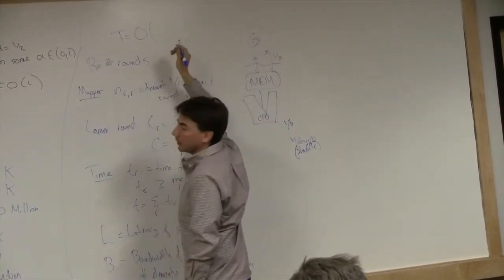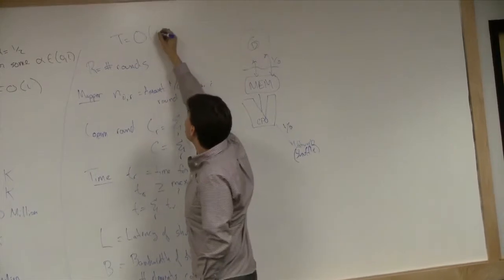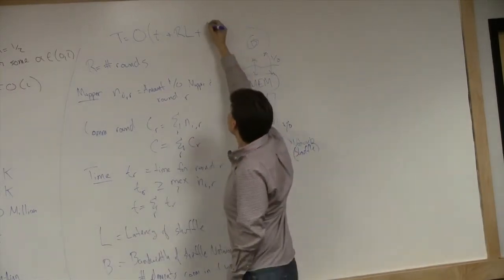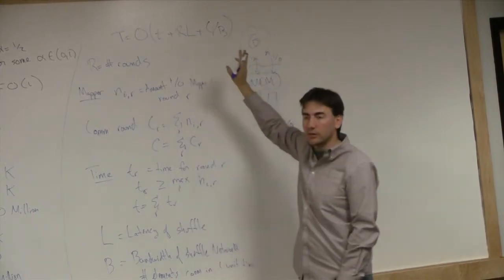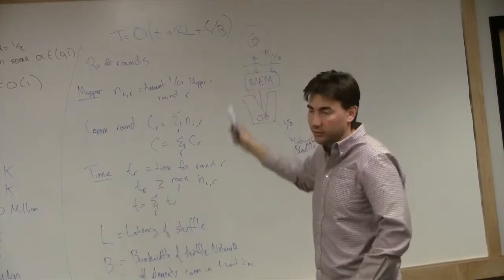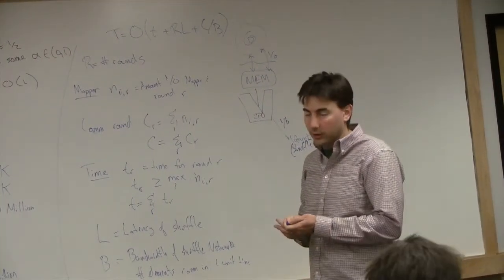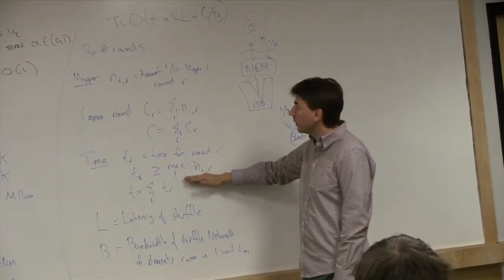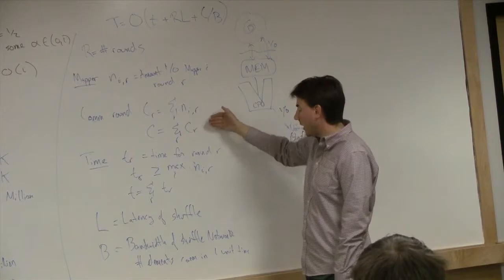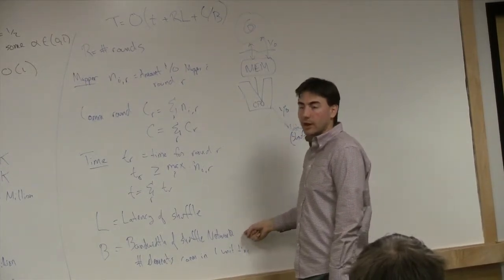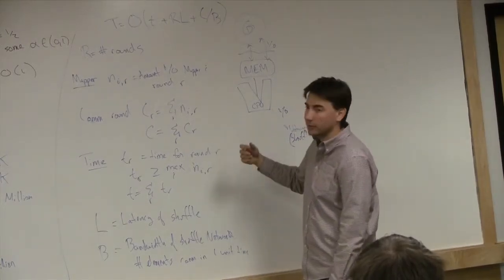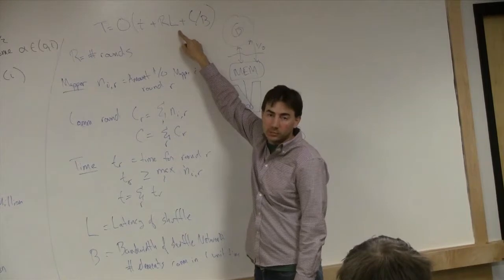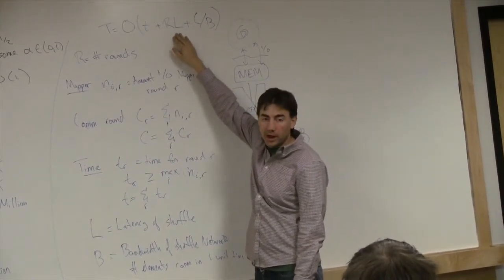The total time is roughly T + R*L + C/B. That's how all these parameters fit together - that's the function you want to minimize. T has to do with maximum IOs per round, C is total communication divided by bandwidth, and R*L accounts for latency per round. So if latency is really reduced because you're running Spark, then the amount of optimization you need per round really decreases.